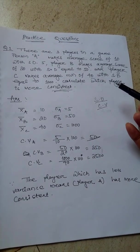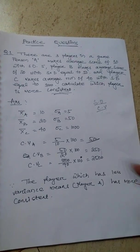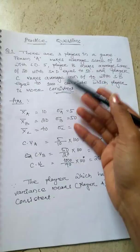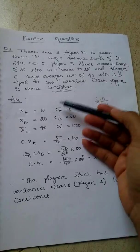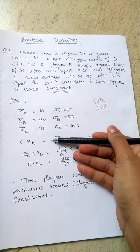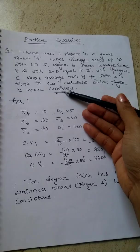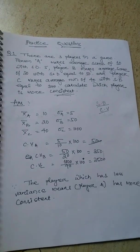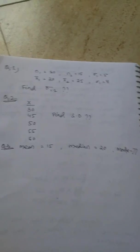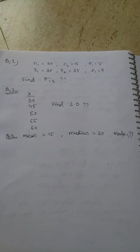Player A is more consistent. That is how these questions work — first you identify the data given in the question, then you apply the correct formula, and you should know that the player with less variance is more consistent. Thank you.